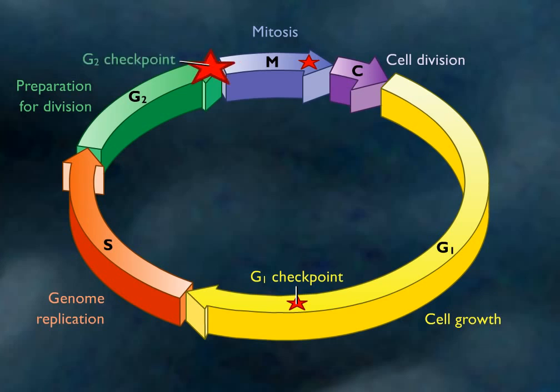The G2 checkpoint assesses the success of DNA replication and triggers the start of the mitosis M phase. If this checkpoint is passed, the cell initiates the beginning of mitosis.